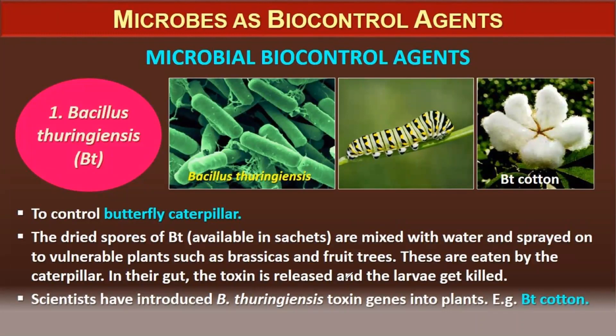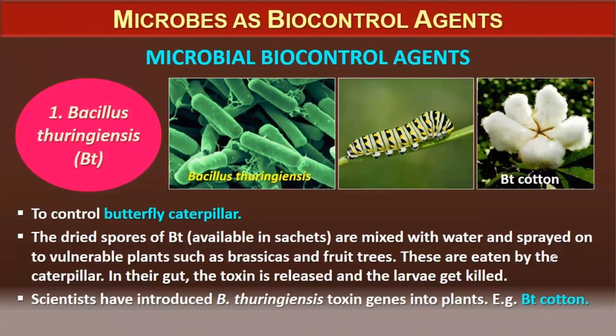An example of a biocontrol agent is Bacillus thuringiensis (Bt). To control butterfly caterpillars, dried spores of Bt are mixed with water and sprayed onto vulnerable plants such as brassicas and fruit trees. The caterpillars eat the spores; in their gut the toxin is released and the larva gets killed. Scientists have introduced the Bt toxin gene into plants — one example is Bt cotton.